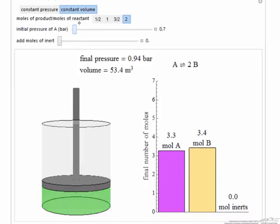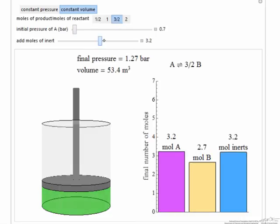If I add inert, notice nothing happens for any of these reactions. The inert has no effect because we're assuming ideal gases—inert doesn't change the partial pressures.